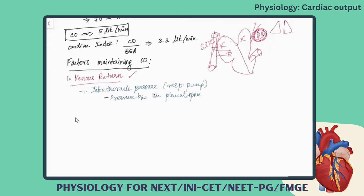We will see pleura in detail in respiratory physiology. That space is maintaining a pressure, which is also called intrathoracic pressure. How is this intrathoracic pressure involved in venous return? We all know the location of the heart — you have the lungs and in the mediastinum we have the heart. The intrathoracic space is the outer covering area, and it is maintaining a pressure called intrathoracic pressure.